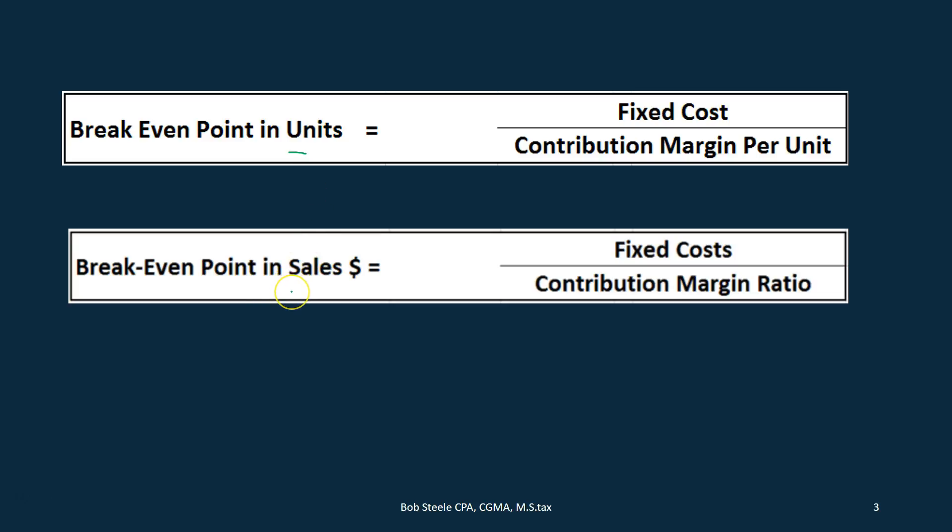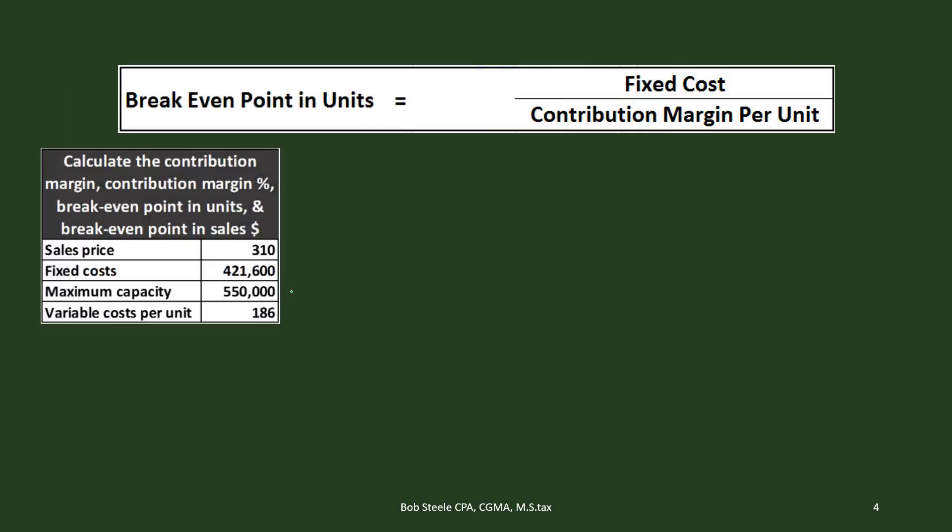We can also think about it in terms of sales dollars — how many sales dollars we need to make, how many units we need to sell to hit those sales dollars to reach that same break-even point, and then take it a step further to break-even plus the profit we want to walk away with. So let's break these calculations down.